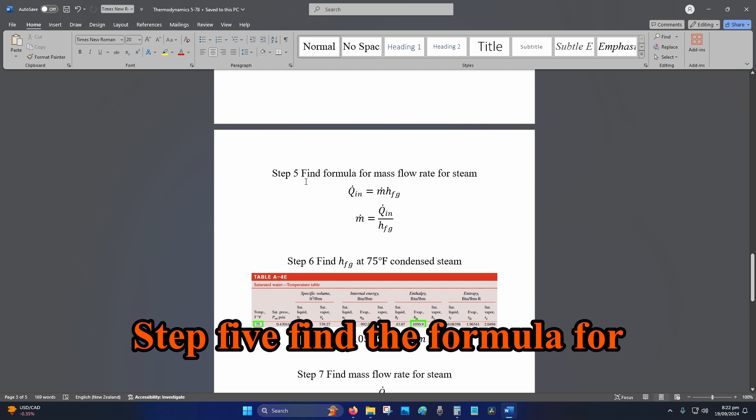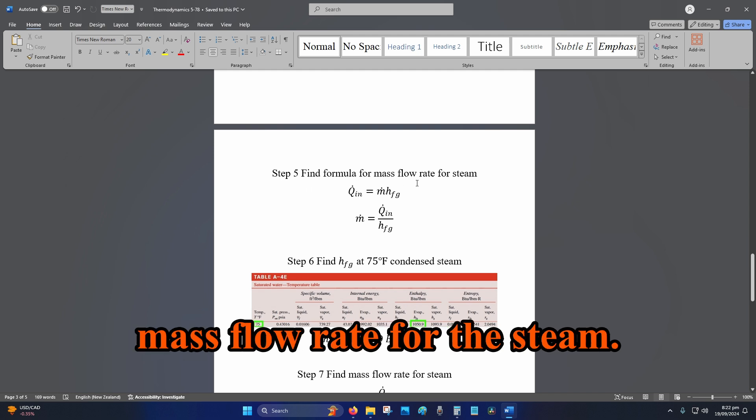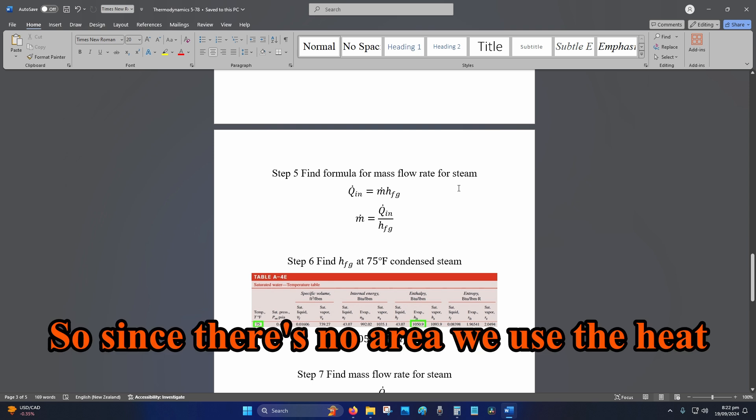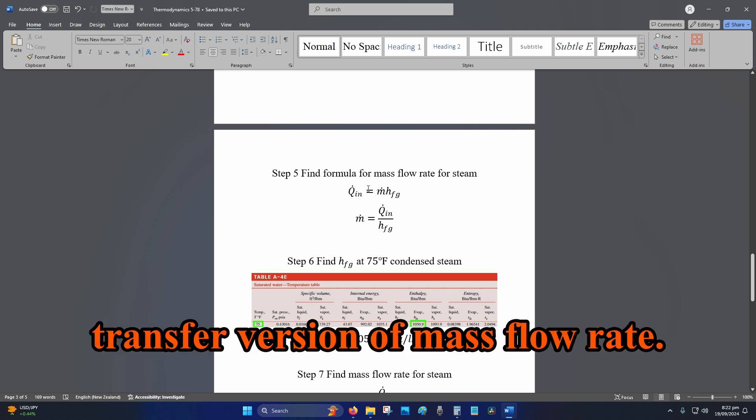Step five, find the formula for mass flow rate for the steam. So since there's no area, we use the heat transfer version of the mass flow rate.